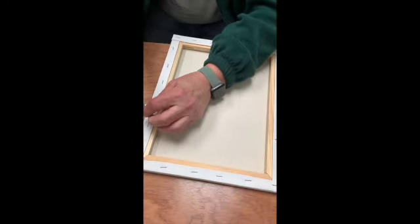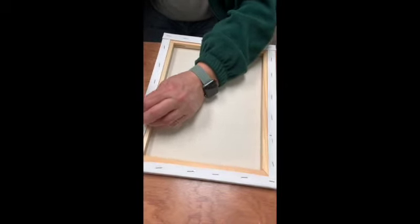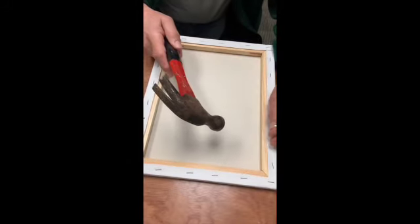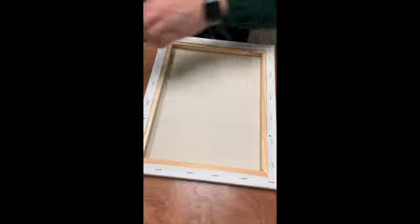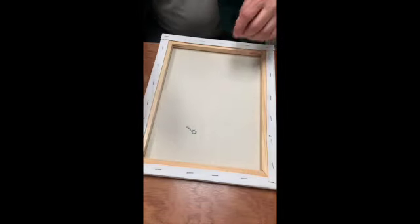Tap lightly, move it around, pull it out, tap lightly, pull it out. Then you take your screw eyes, your two screw eyes, and go into those holes like so.